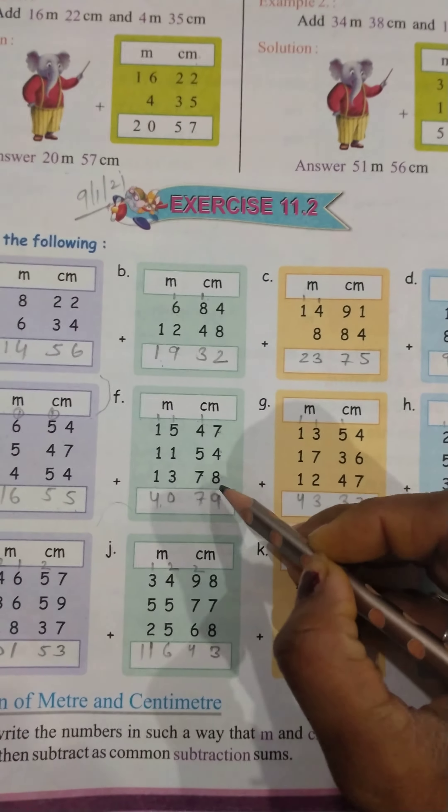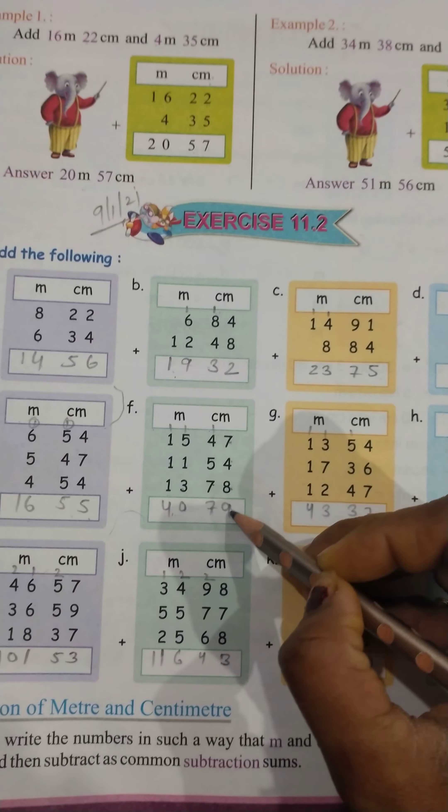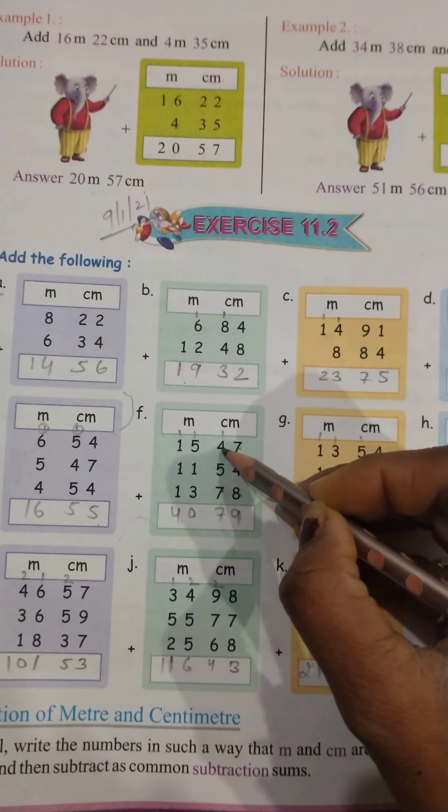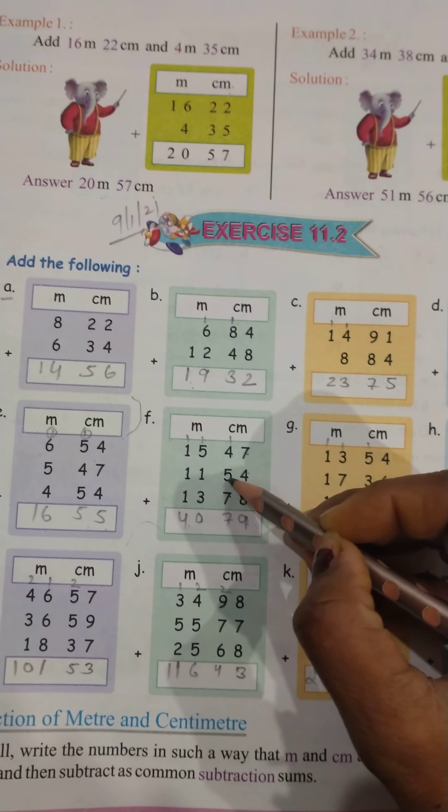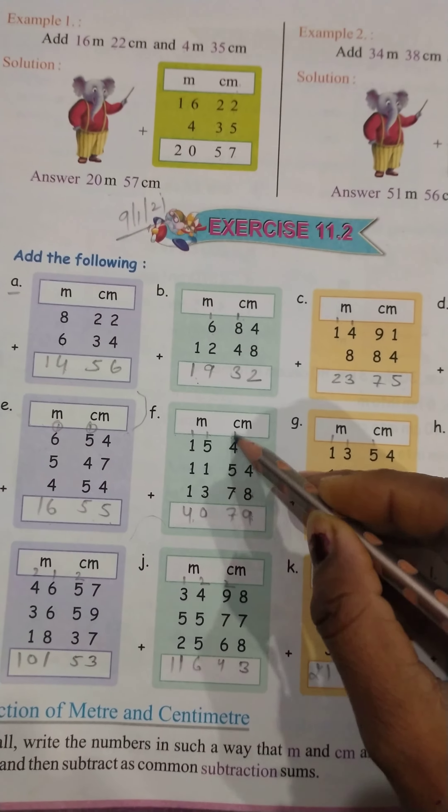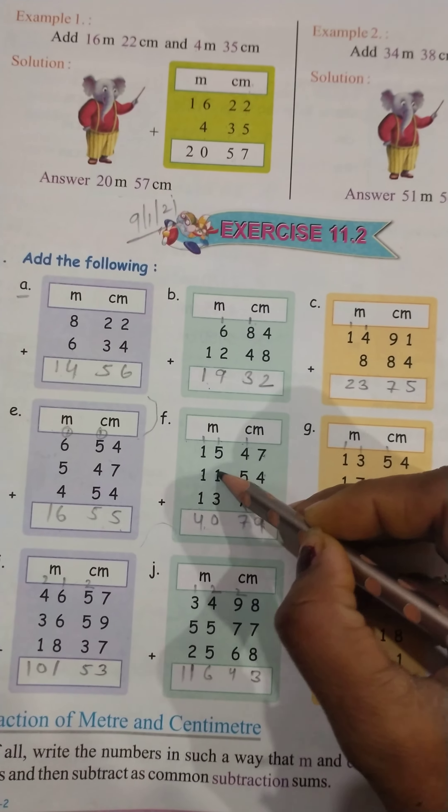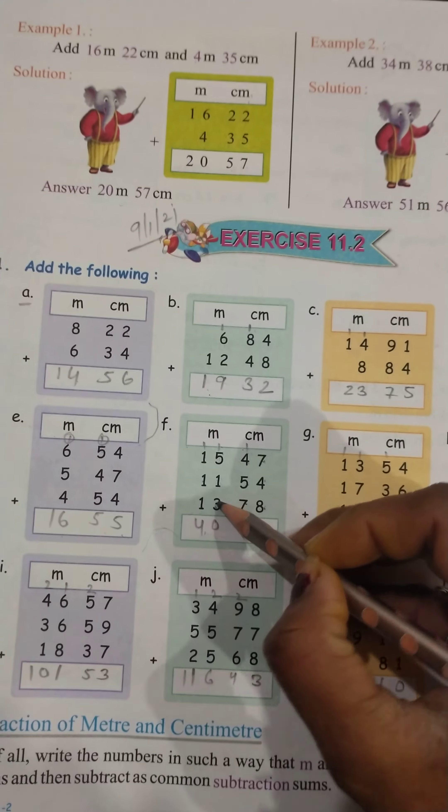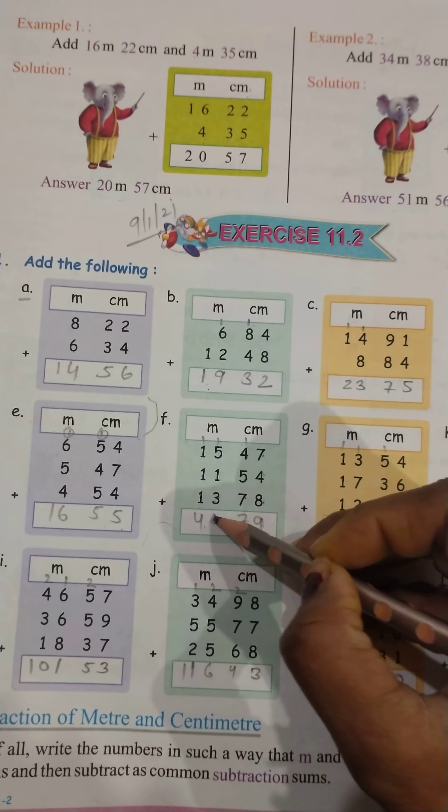7 plus 4, 11. 11 plus 8 is equal to 19. 19 come 1 carry. 4 plus 5 is equal to 9. 9 plus 7 is equal to 16 plus 1, 17. 1 carry. 5 plus 1, 6. 6 plus 3, 9. 9 plus 1 is equal to 10.